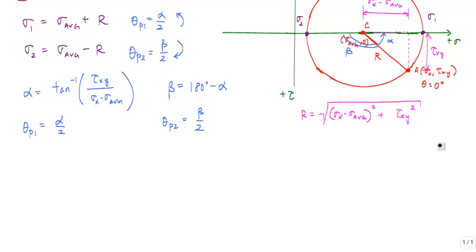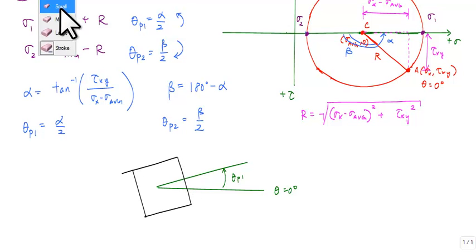So if I want to draw the stress element in its principal stress state, I remember that theta equals 0 was established as horizontal. This was theta equals 0 degrees. And to get to sigma 1, I needed to go alpha over 2 or theta p1. So this angle associated with this sigma 1 would be here. This would be theta p1. And I would draw a line perpendicular to this right here and the rest of the box or the square. And this theta p1 would be pointing to my sigma 1 value. So I would have a stress here, sigma 1.